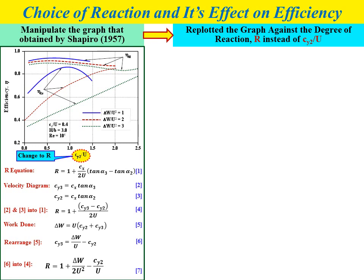Work done in the turbine is delta W equals U times (Cy2 plus Cy3), equation number 5. Rearranging equation 5 gives Cy3 equals delta W divided by U minus Cy2, equation number 6. Substituting equation 6 into equation 4, we get a new expression for degree of reaction: R equals 1 plus (delta W divided by 2U squared) minus (Cy2 divided by U), equation number 7.